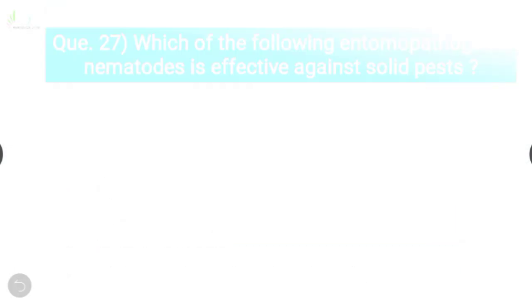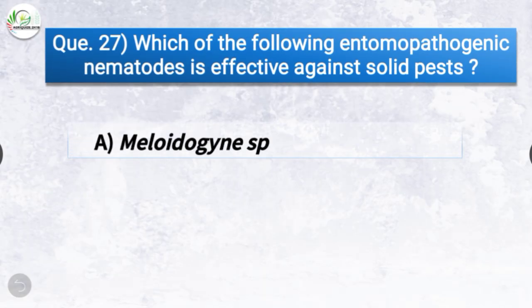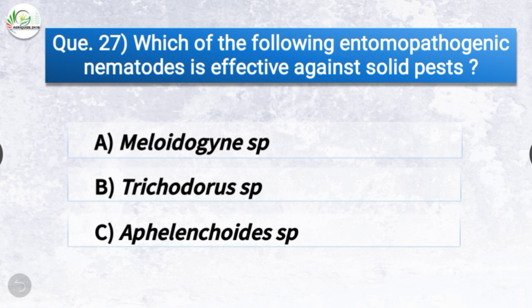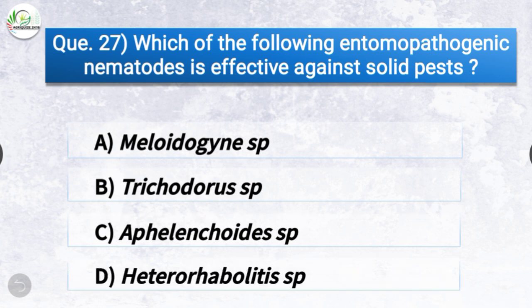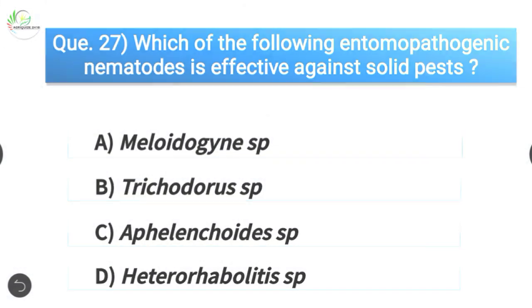Question number twenty-seven: Which of the following entomopathogenic nematodes is effective against soil pests? The options are Meloidogyne species, Trichodorus species, Aphelenchoides species, or Heterorhabditis species. The correct answer is option D, Heterorhabditis species — Heterorhabditis species is the entomopathogenic nematode effective against soil pests.